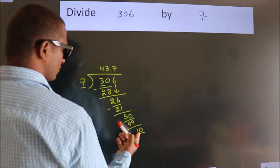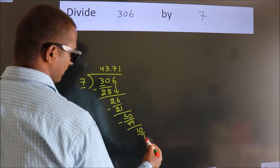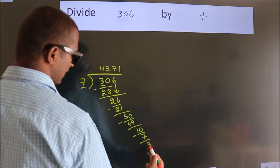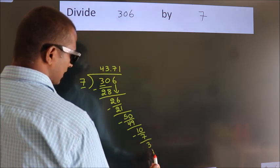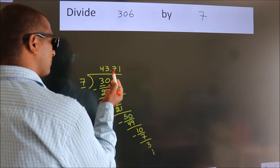A number close to 10 in 7 table is 7 ones 7. Now, we subtract. We get 3. And the division continues. It is enough if we do up to 2 decimal places.